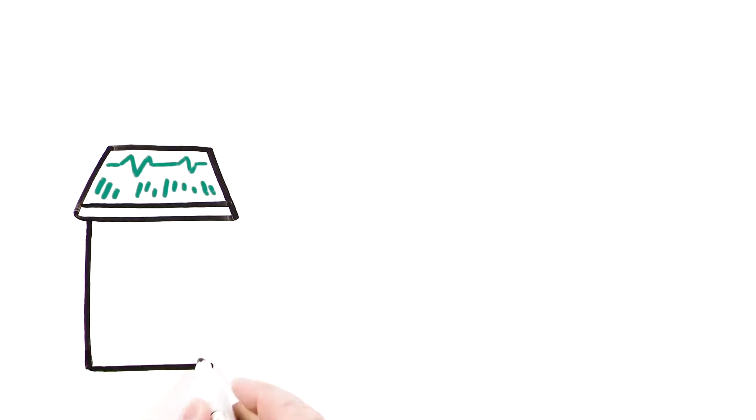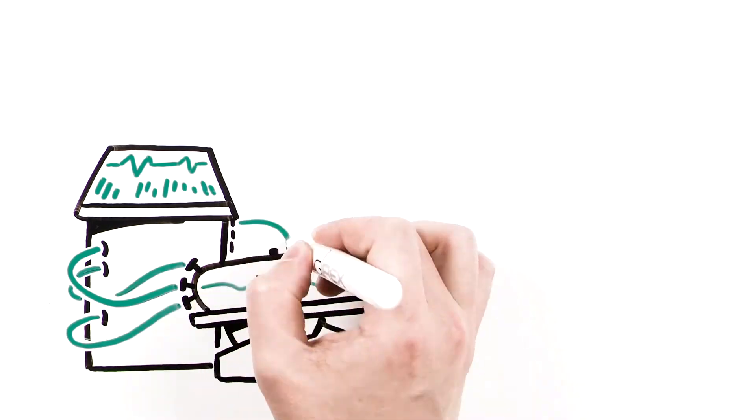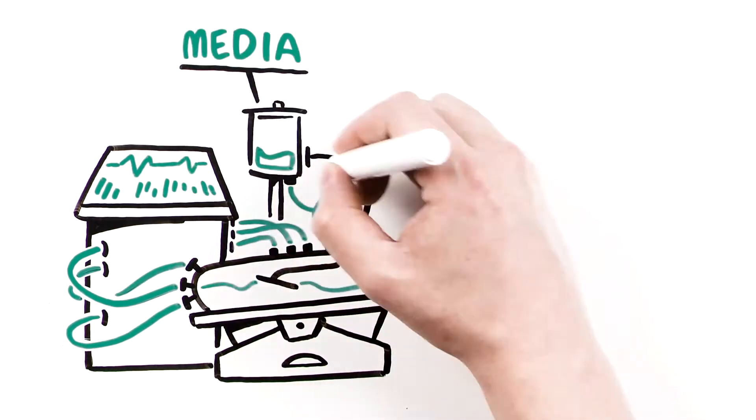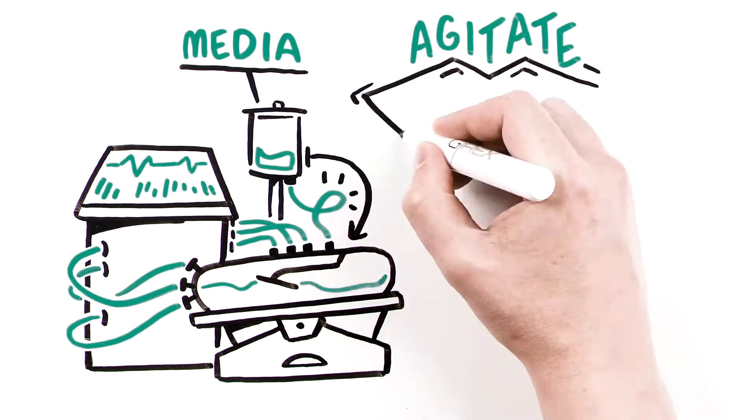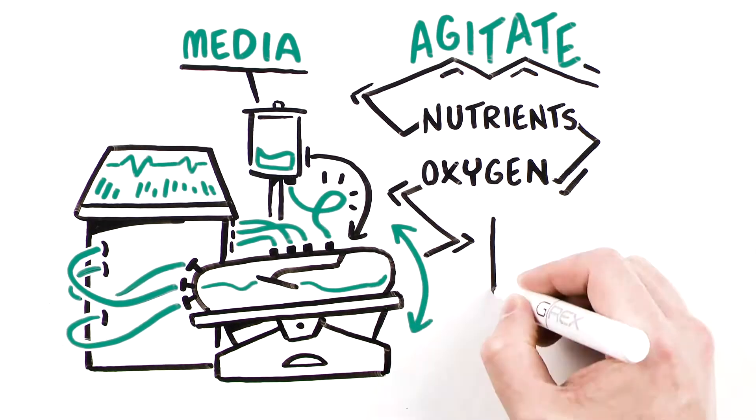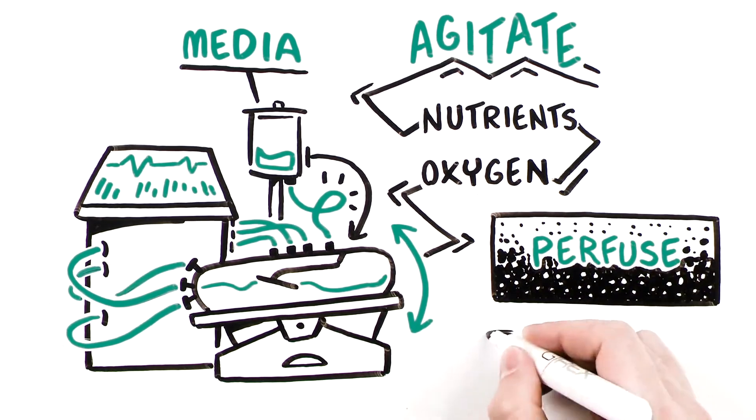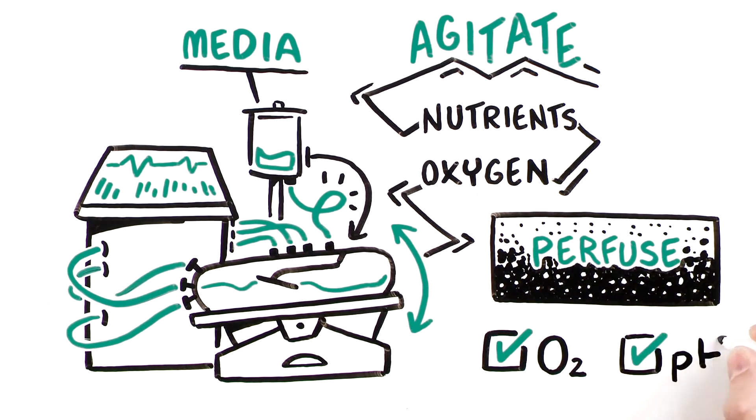Forced to automate feeding, complex machines were created to automatically move media from a source container to the cell growth container and agitate or rock the cell growth container to deliver nutrients and oxygen to cells. Simultaneously, the machines perfuse gas to the cell container to meet oxygen demand and control pH levels.